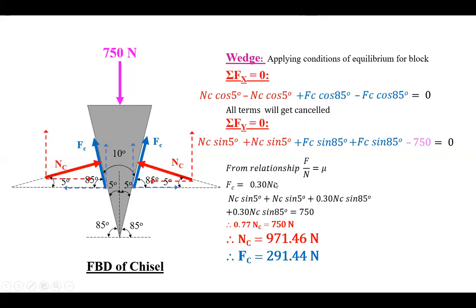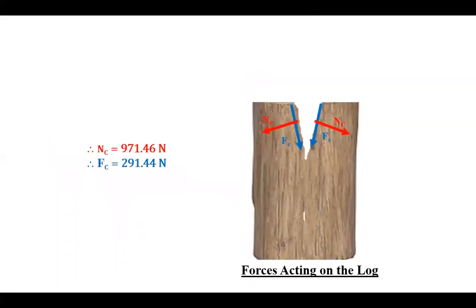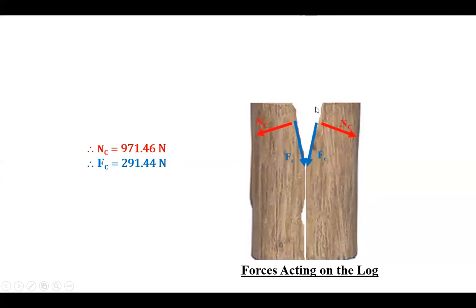Since Fc equals 0.3 times Nc, substituting Nc gives Fc equal to 291.44 newtons. These are the reaction forces at the wedge contact surfaces. By Newton's third law, the same forces act on the wooden log — equal and opposite. Therefore the forces exerted on the log are: Nc equals 971.46 newtons and Fc equals 291.44 newtons. That is the end of Example 3.